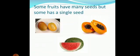Some fruits have many seeds but some have a single seed. Here you can see that mango has a single seed. Like mango, many other fruits have one seed only. Now you can see the picture of papaya and watermelon. Papaya and watermelon have a number of seeds or many seeds.